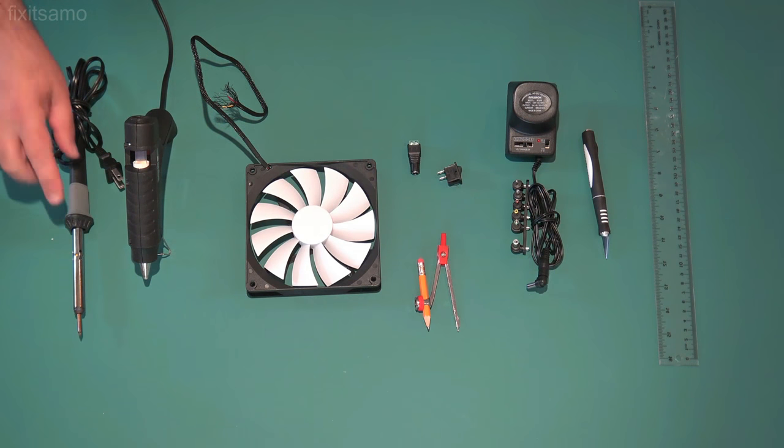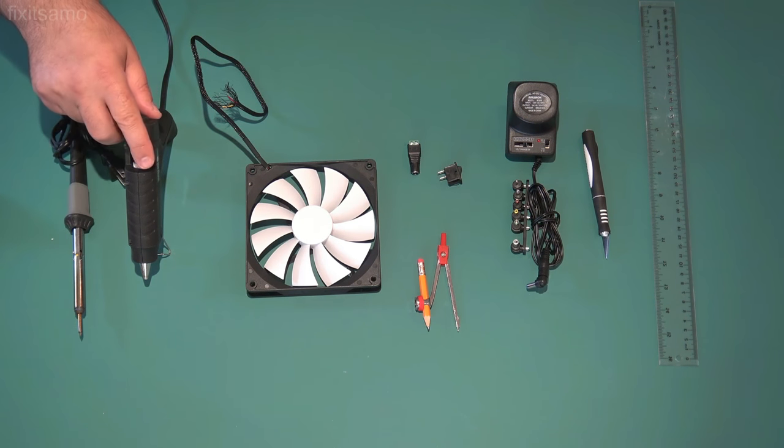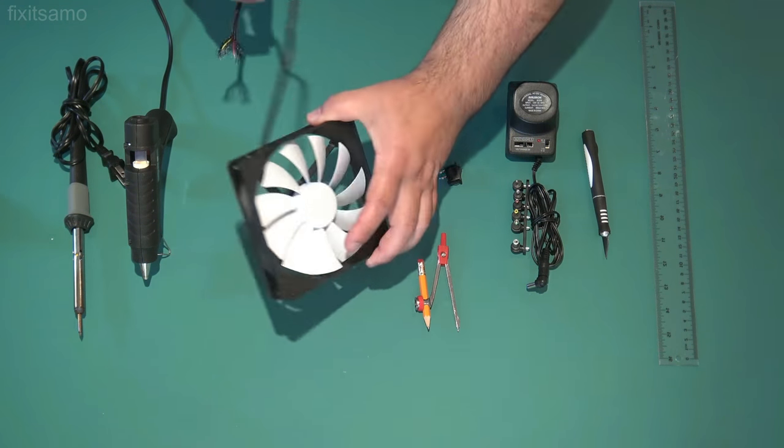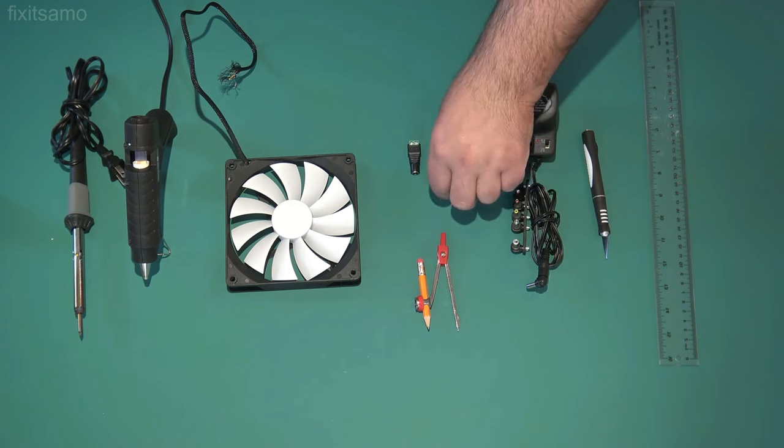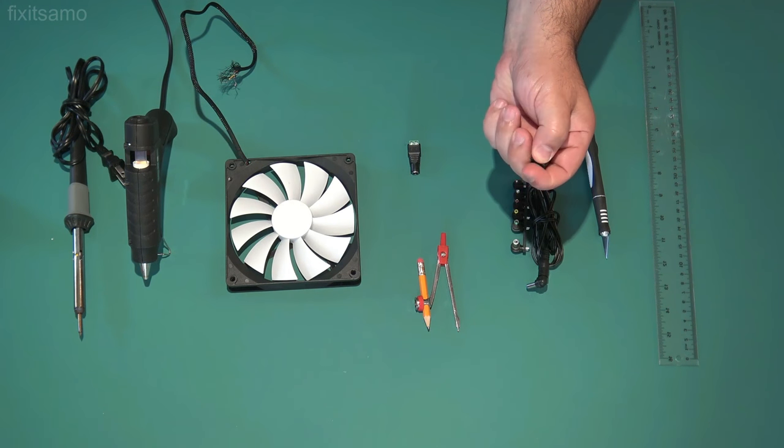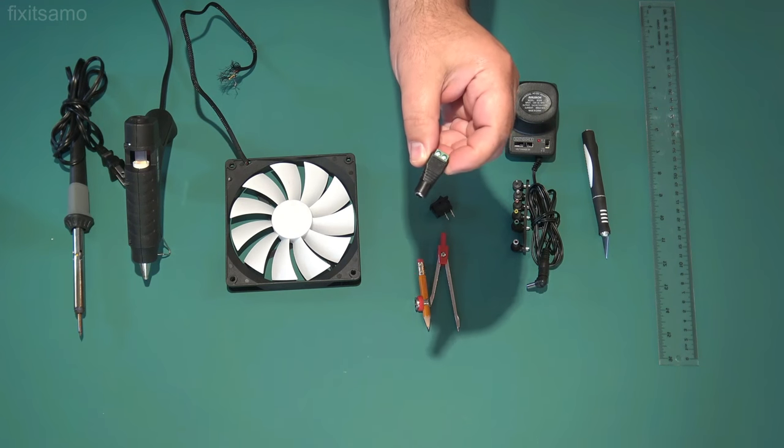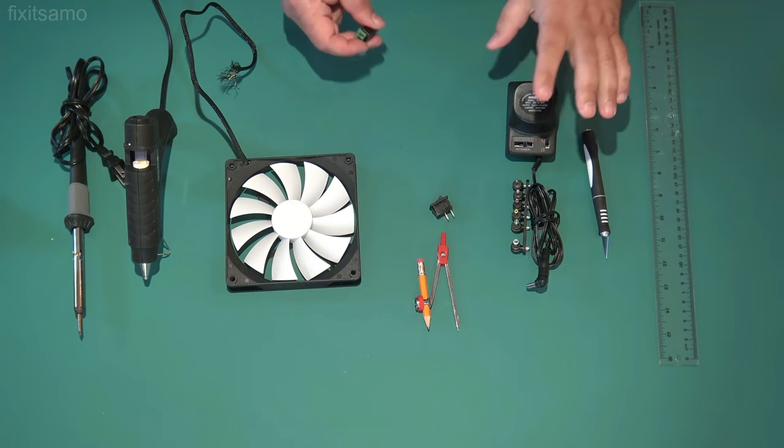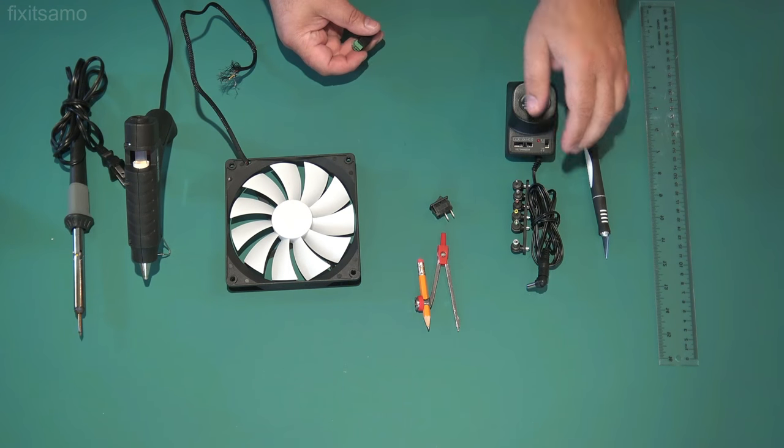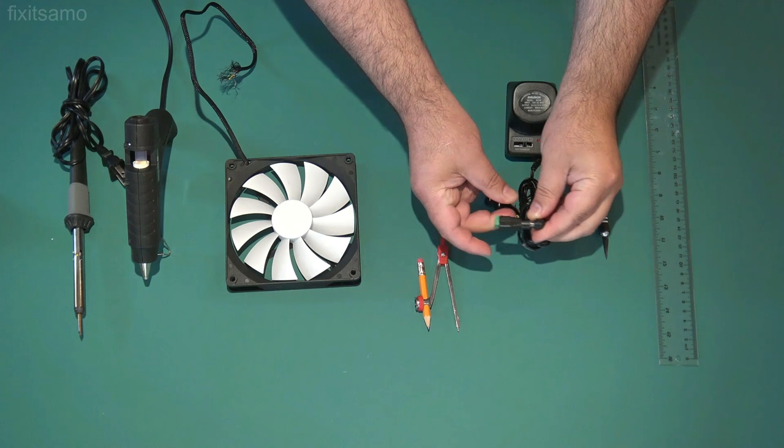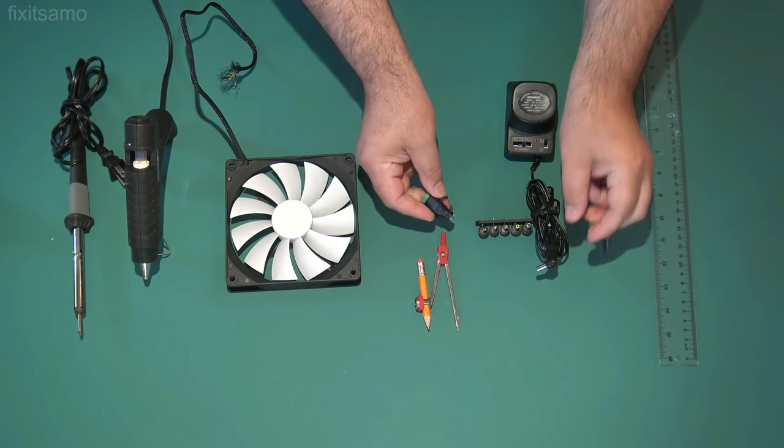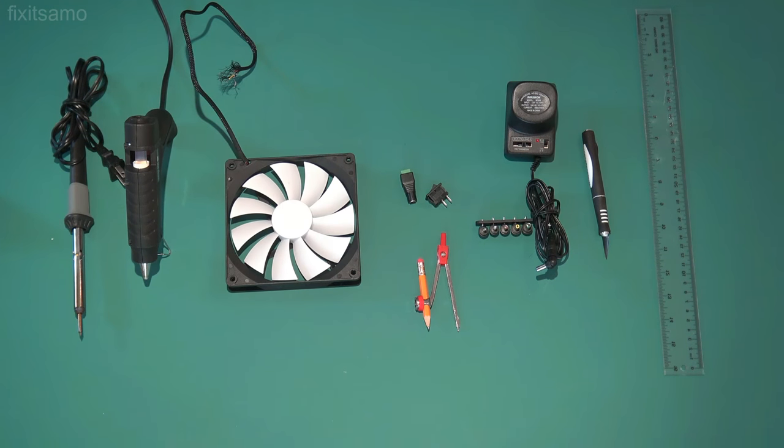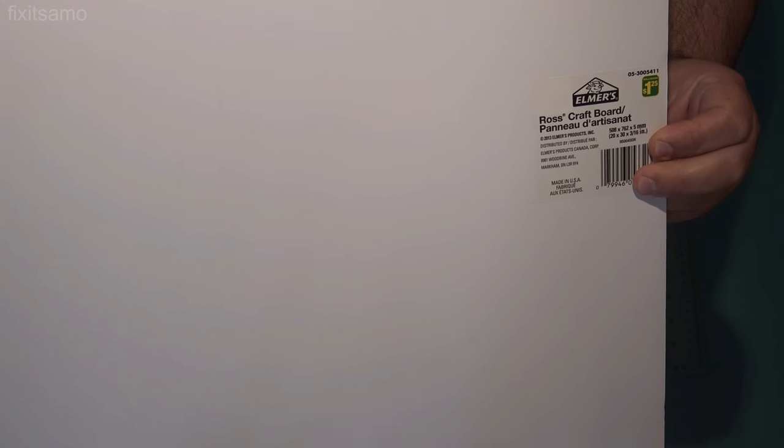Okay guys here's what we need: a soldering gun, plastic glue gun, 12 volt PC fan, compass, on off switch, and I've got a female adapter connection and the universal adapter that fits in here. Cutter and a ruler and finally a craft board like this one.